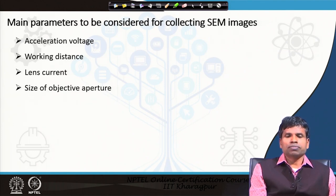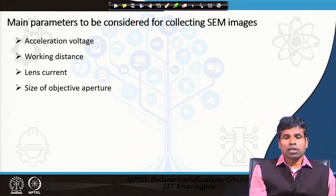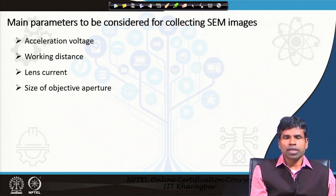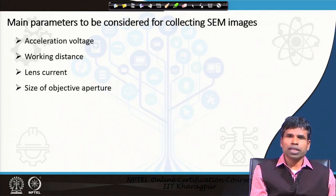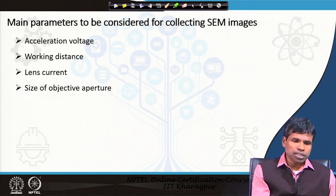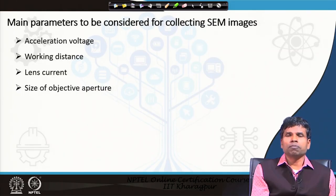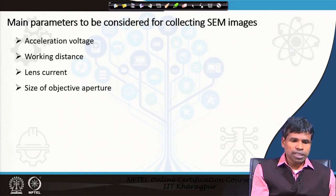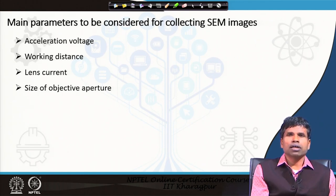Now, what are the main parameters that we must consider to collect a good SEM image? These are parameters under the control of the operator. When an operator goes to operate a microscope, he has certain control — he cannot control the sample, but he can change the parameters of the microscope to get the best image and the required information. The four main parameters the operator controls are: acceleration voltage, working distance, lens current, and size of the objective aperture.